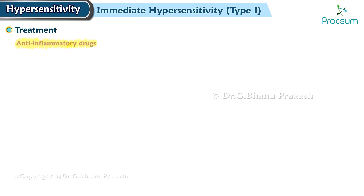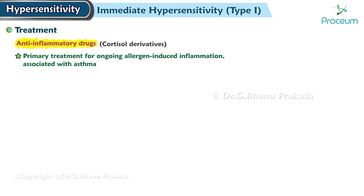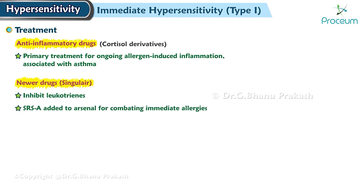Anti-inflammatory drugs, such as cortisol derivatives, are often used as the primary treatment for ongoing allergen-induced inflammation, such as that associated with asthma. Newer drugs, such as Singulair, that inhibit leukotrienes, including SRSA, have been added to the arsenal for combating immediate allergies.